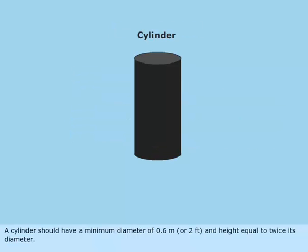A cylinder should have a minimum diameter of 0.6 meters or 2 feet and height equal to twice its diameter.